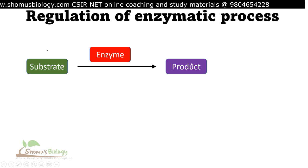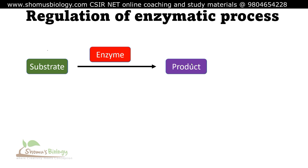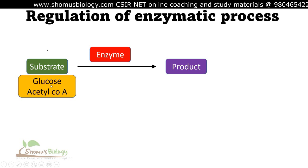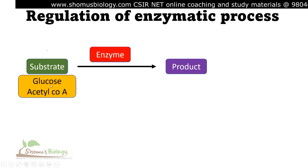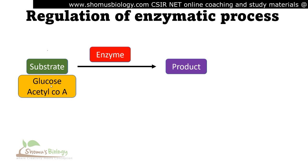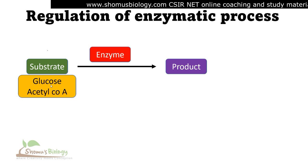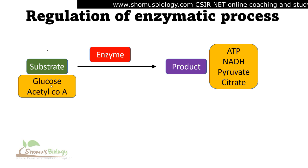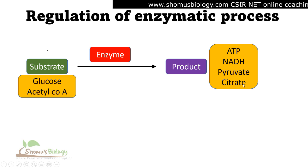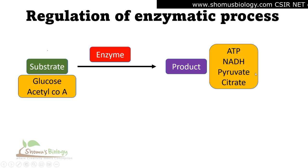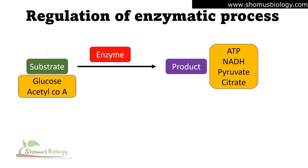If the substrate concentration is high — for example, glucose is a substrate for glycolysis, acetyl-CoA is a substrate for the TCA cycle — and the product can be pyruvate for glycolysis, or citrate as a further product. In all these processes, as these are catabolic reactions, we are producing energy as ATP, and also producing NADH and FADH2 in reduced form as a result of redox reactions catalyzed by dehydrogenase enzymes.